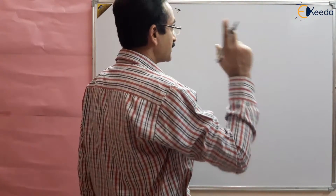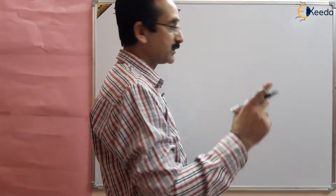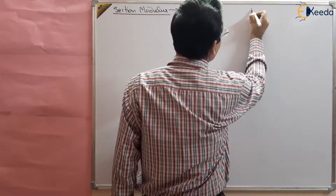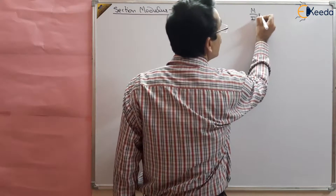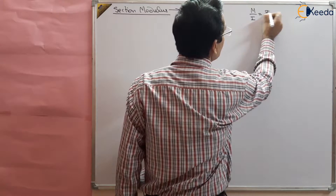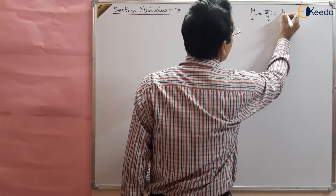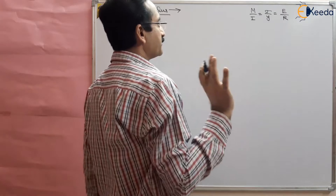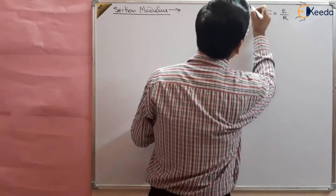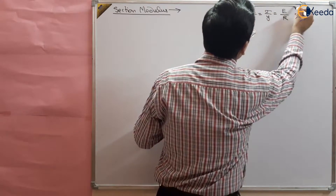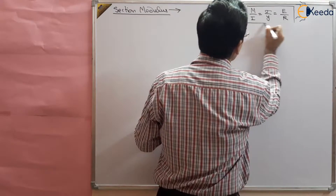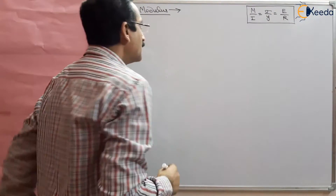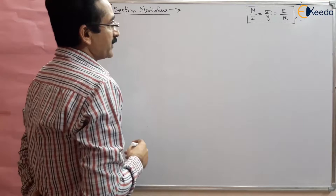Go to the bending equation — remember the bending equation, it is very very important. The bending equation is: M by I equal to sigma by y equal to E by R. This you have to remember on your fingertips; it is a very important equation.